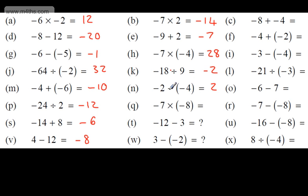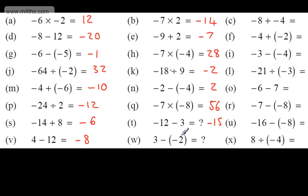Looking at it another way: two negatives give a positive — multiply by 2, then subtract 2. 7 times 8 is 56; two negatives, so the answer is positive 56. If it's negative 12 outside and it goes down by 3 degrees, it's now negative 15 — subtracting a positive. 3 subtract negative 2: we're increasing the value, giving positive 5.